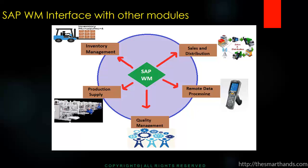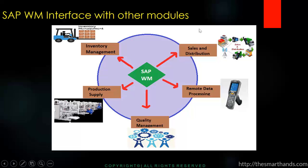SAP WM is also integrated with quality management, remote processing where barcode scanners can be used, and the sales and distribution module. The SD integration covers sales orders and the delivery process, where WM functionality is used to locate material for the picking process. We will cover all of this in detail in later videos.